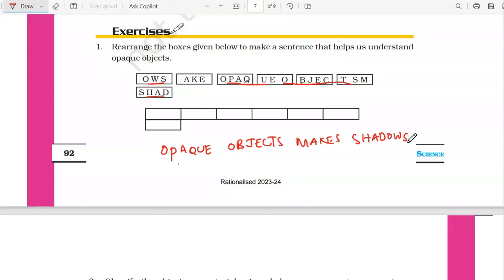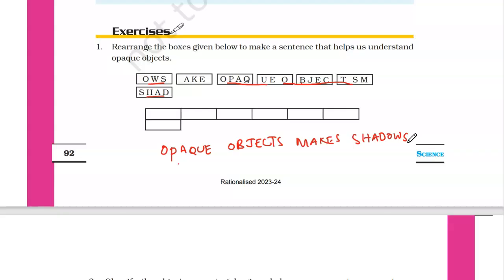If you take a transparent object and put light on it, light will pass through the transparent or translucent object and shadows will not be formed. But if you put light on an opaque object, then shadows will be formed.